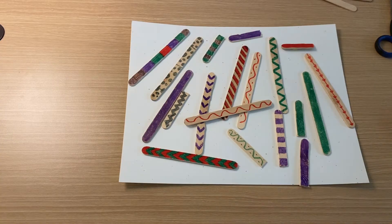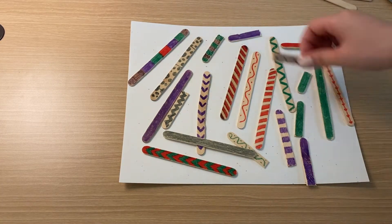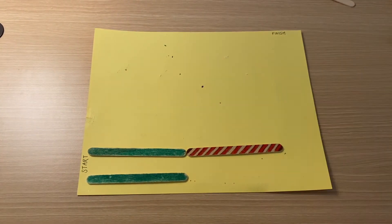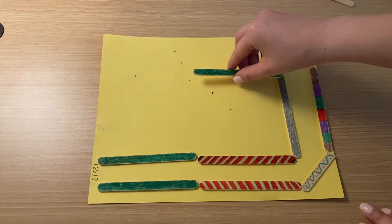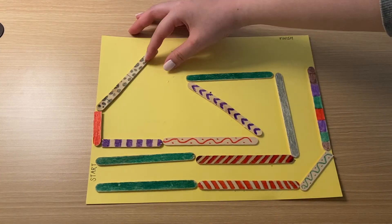Now using the popsicle sticks, you can create a pathway to the finish line. Be sure that your pathway is wide enough for your paper fastener to slide through.